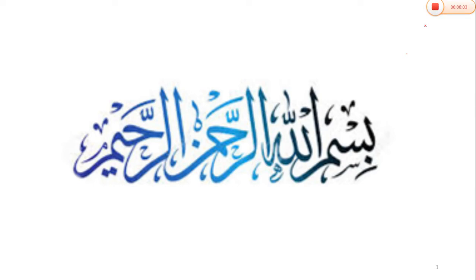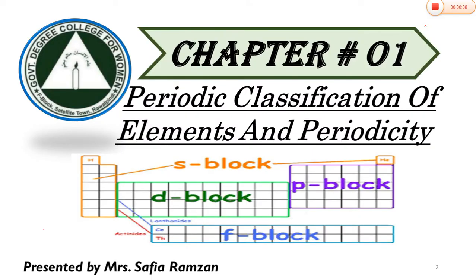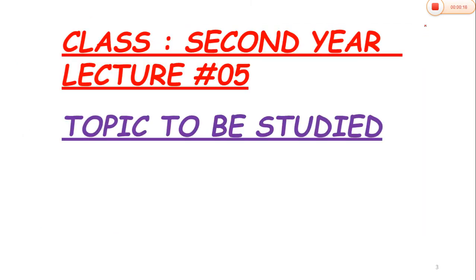Bismillahirrahmanirrahim. Assalamualaikum dear students. Hope you all are fine and enjoying good health. We are discussing chapter number 1 from your secondary chemistry book. The name of the chapter is Periodic Classification of Elements and Periodicity. Here I am going to start lecture number 5 from this chapter.